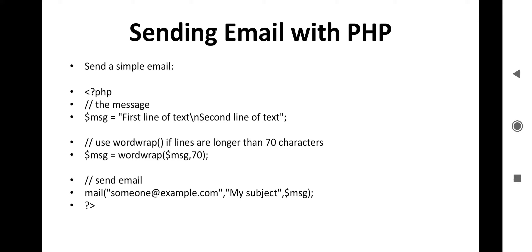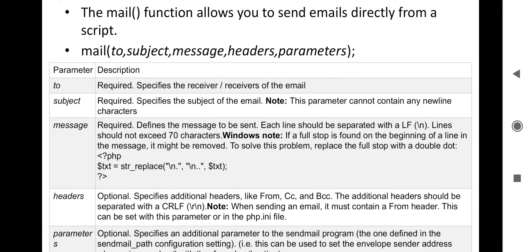Here is a simple example. The message has a first line of text, then \n means the next line has a second line of text. We use the wordwrap() function — if your message string is longer than 70 characters, it automatically wraps to the next line. So we write: $message = wordwrap($message, 70). After that we use the mail() function with the email address, subject, and message body.